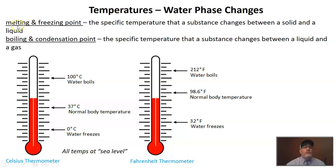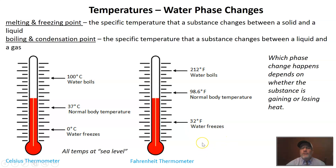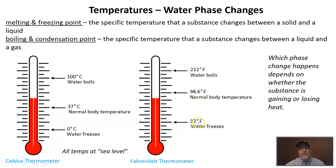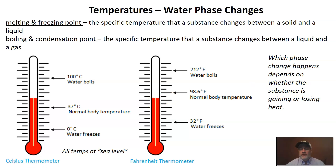It may seem strange that the melting and freezing point of water is exactly the same temperature. Which phase change is happening — melting or freezing — really depends on whether the substance is losing heat or gaining heat. If water is at 32 degrees and gaining heat, that's melting. If it's at 32 degrees and losing heat, then the water is going to be freezing.